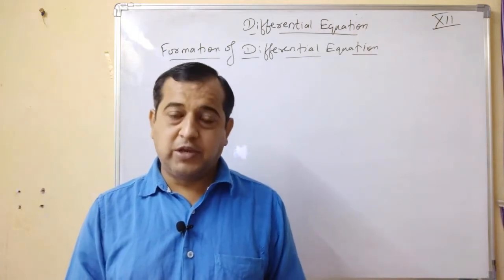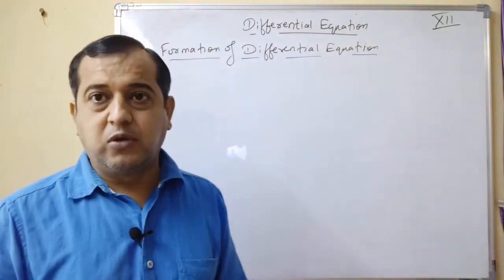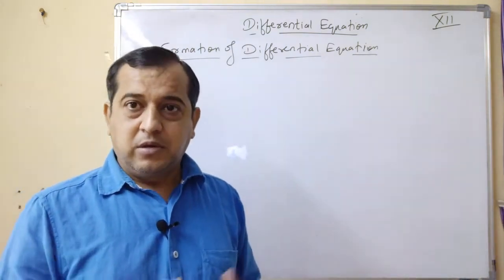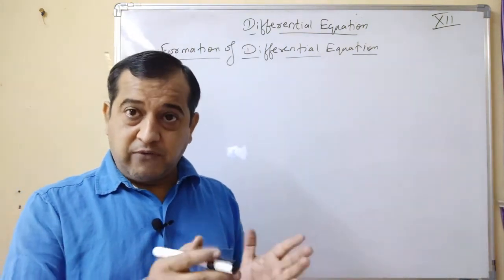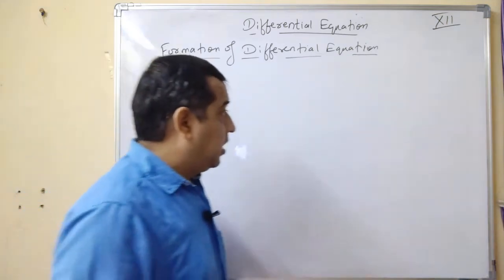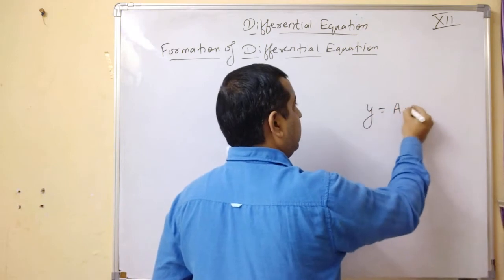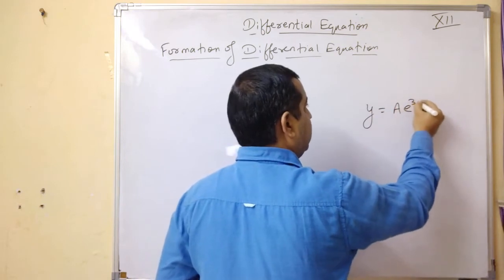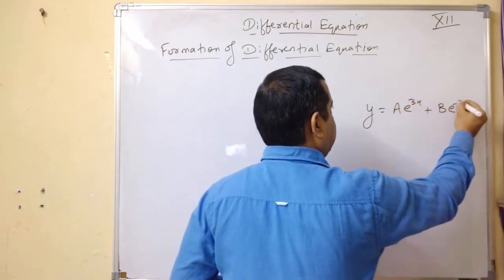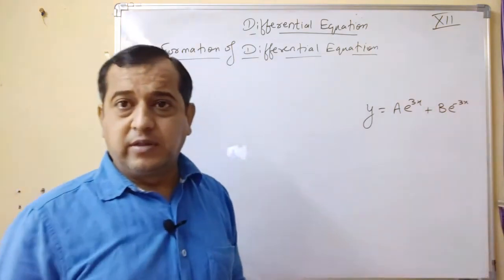We should know the solution of the differential equation. If we know the solution of the differential equation, we can find or form the differential equation. For example, the given solution is: y = ae^(3x) + be^(-3x). You can clearly see that this is a general solution.